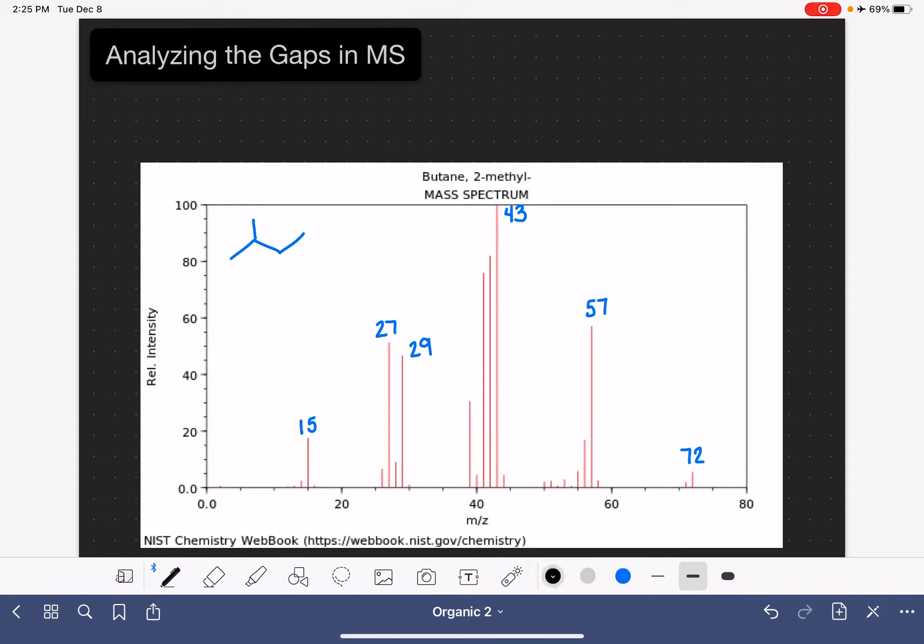So after we've identified the values of each one of these prominent peaks, the next thing we want to do is look at the difference in mass between each one of these peaks.